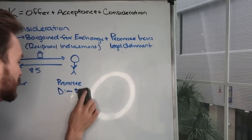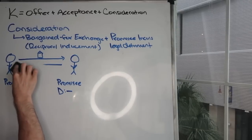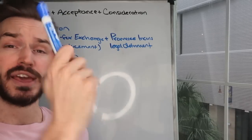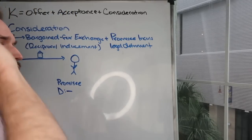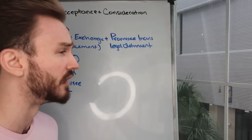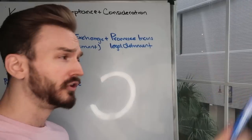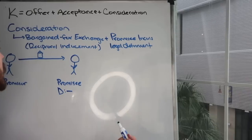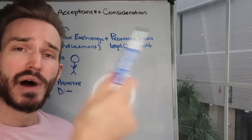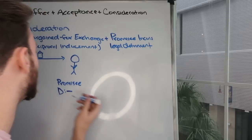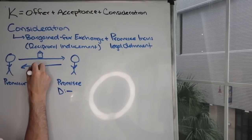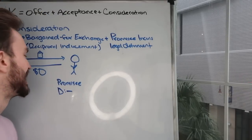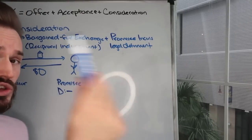Now let's change this up. Let's say I offer to give you this dry erase marker in exchange for nothing — I'm giving it to you for free and you accept. We have offer and acceptance, but do we have consideration? I'm offering to give you my dry erase marker for nothing. You are giving me a big goose egg — no money, no forbearance, nothing.